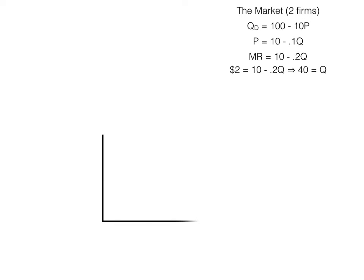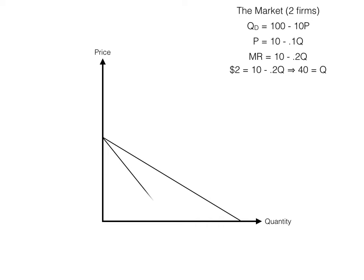Let's take a look at a market with two firms. The market demand curve is 100 minus 10p. The inverse of that demand curve is p equals 10 minus 0.1q. We derive a marginal revenue curve of 10 minus 0.2q. If we say that the marginal cost is $2, we set marginal cost equal to marginal revenue, and in the market 40 units will be sold at a price of $6. The profit-maximizing output for both firms combined is they both sell 20 units at $6 each, with market quantity sold of 40. This is in the best interest of the two firms combined.